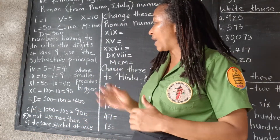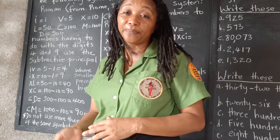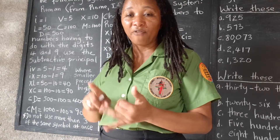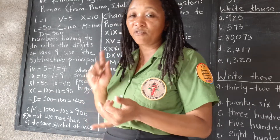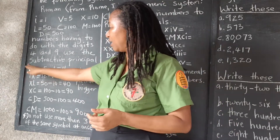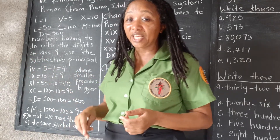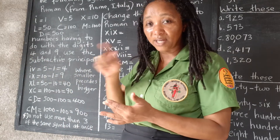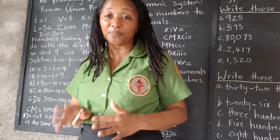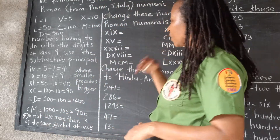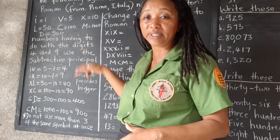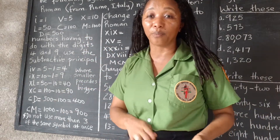The subtractive principle only applies to the 4s and 9s — 40s, 90s, 400, 900. So once you see the smaller symbol preceding the bigger one, that's an indication to isolate that part of the number and subtract. For every other part of the number, we use the additive principle. Following these two rules — the additive and the subtractive principle — let's translate.